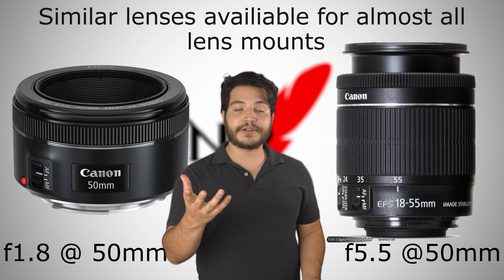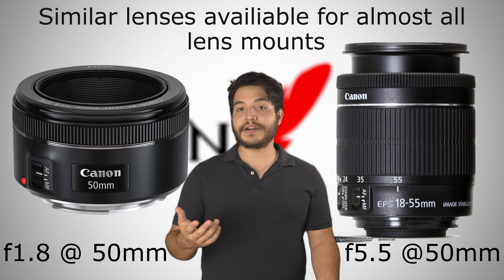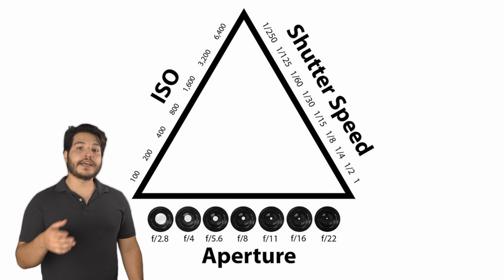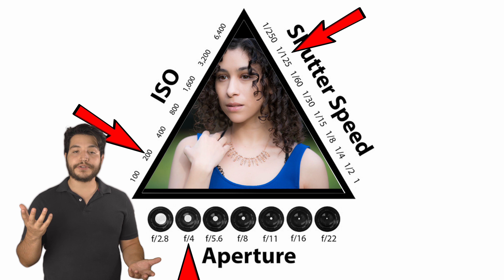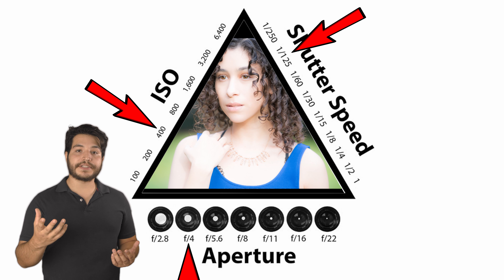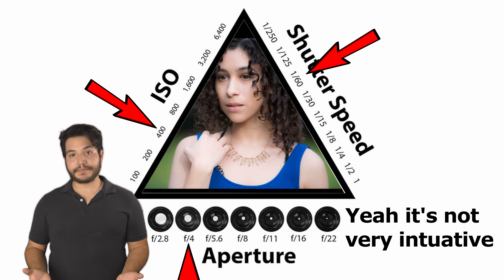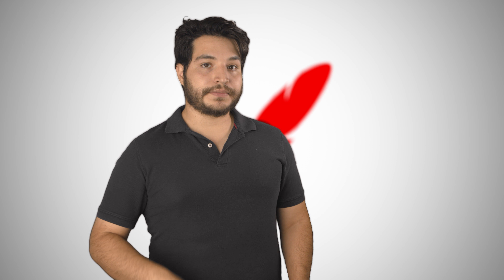Say the 50mm f1.8 versus the kit f5.6 at 50mm. To understand this, you have to be familiar with the exposure triangle — three things that affect brightness or exposure in your picture. A change in one has to be compensated with a change in another for the exposure to remain the same. So here's how aperture affects exposure.